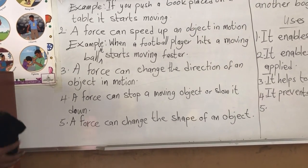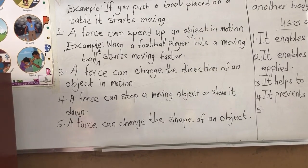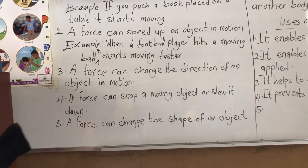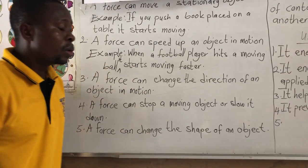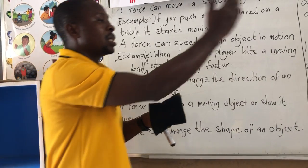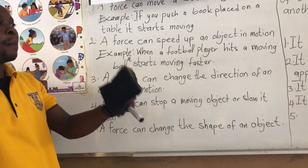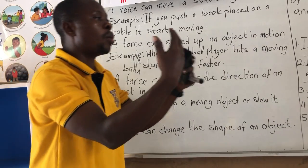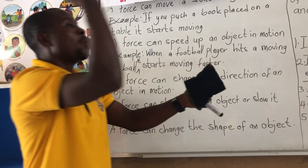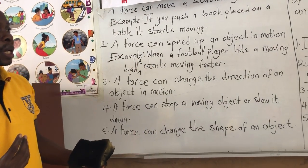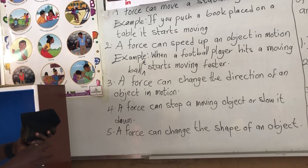Number three: a force can change the direction of an object in motion. Now, when you kick a ball, you have directed the ball to move forward. But when the ball hits the wall, the ball will bounce back to you — the wall pushes the ball back. So when you kick the ball, it is moving in your direction, but the wall too pushes it backward to you. That's how force can change the direction of an object in motion.